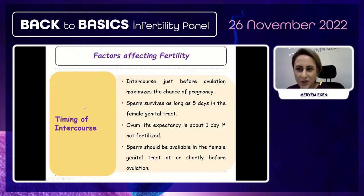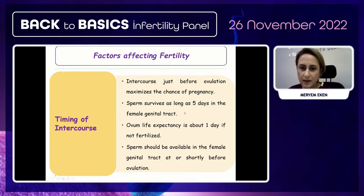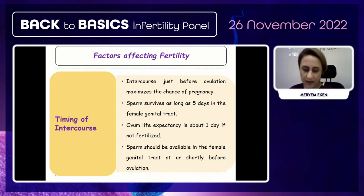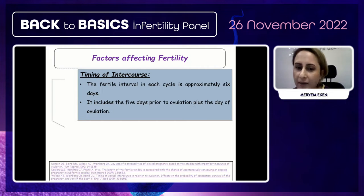Regarding timing of intercourse: intercourse just before ovulation maximizes the chance of pregnancy. Sperm survives as long as five days in the female genital tract, while the egg's life expectancy is about one day if not fertilized. Sperm should be available in the female genital tract at or shortly before ovulation. The fertile interval in each cycle is approximately six days — five days prior to ovulation plus the day of ovulation.